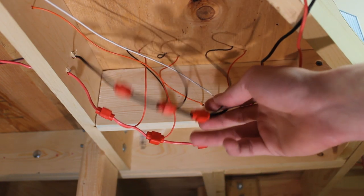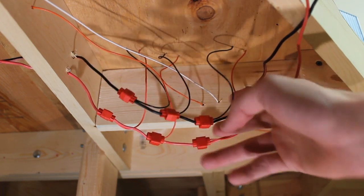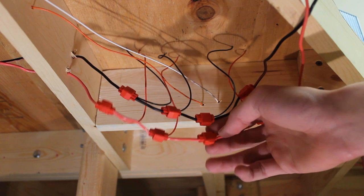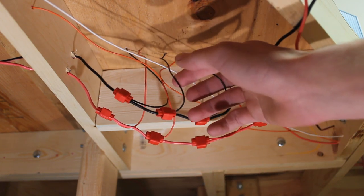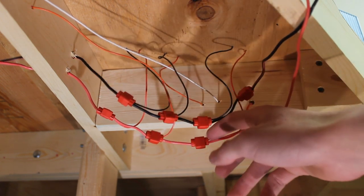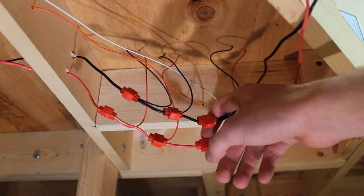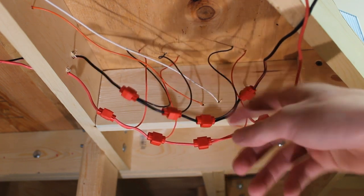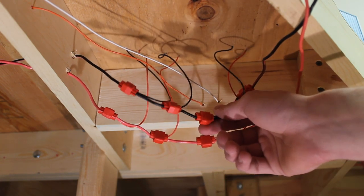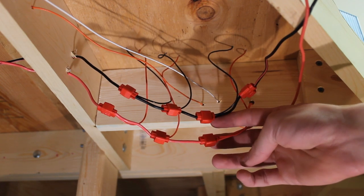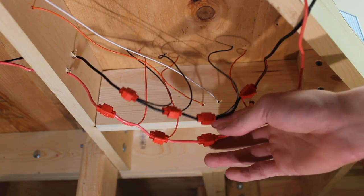And here are my track power buses. And each of these colored wires is a feeder running off to a section of track. And by using different colored wires to correspond to different rails you can make it easy because you just have to match the colors up with the wire, black to black and red to red, makes it pretty simple.